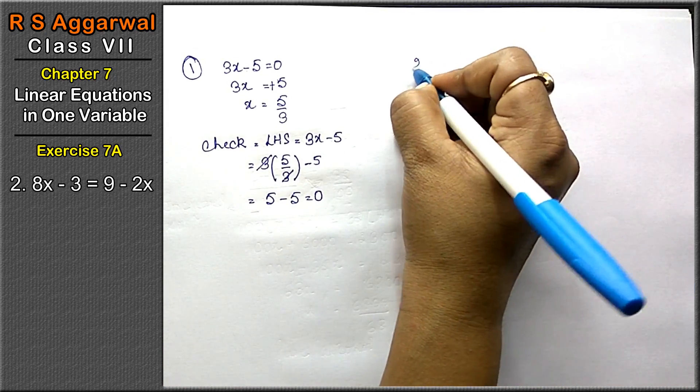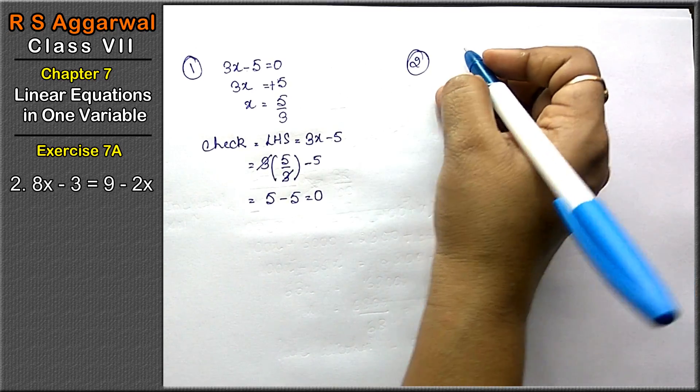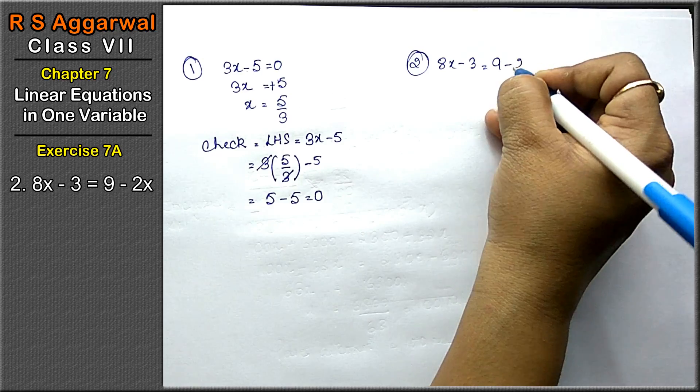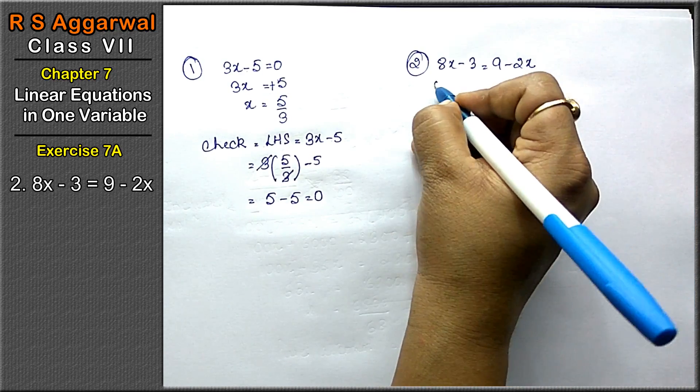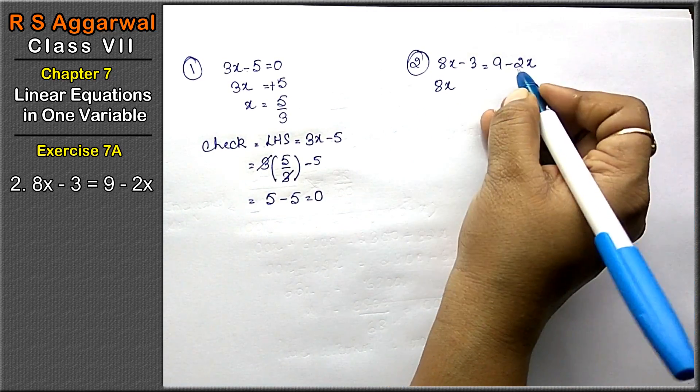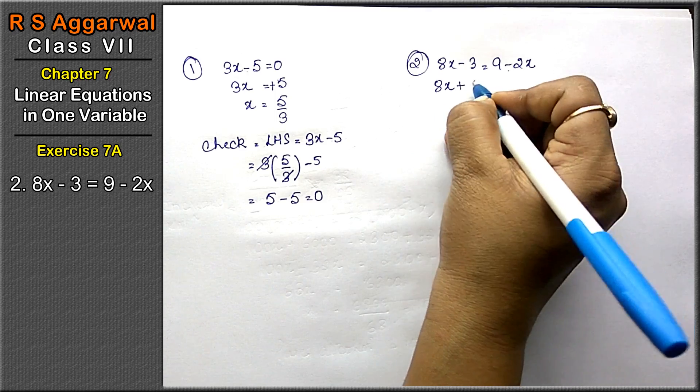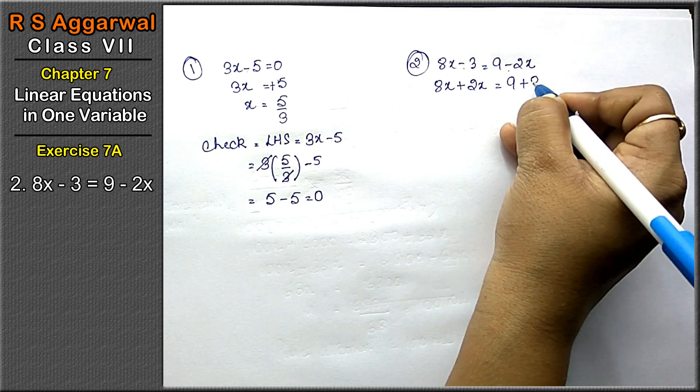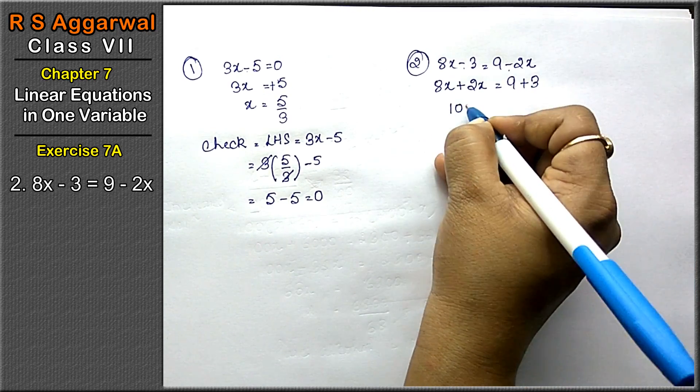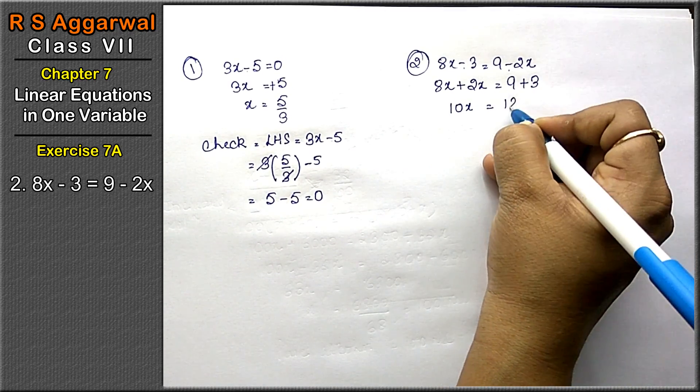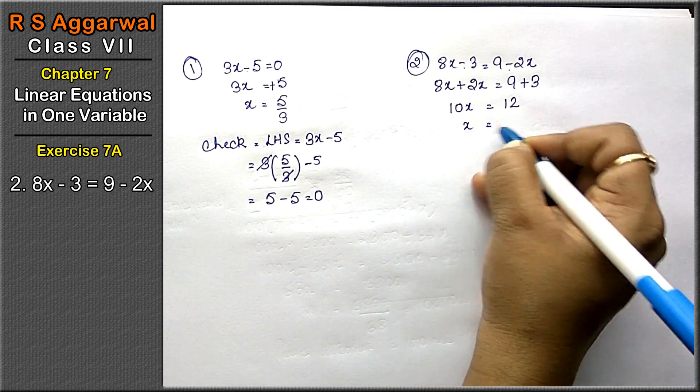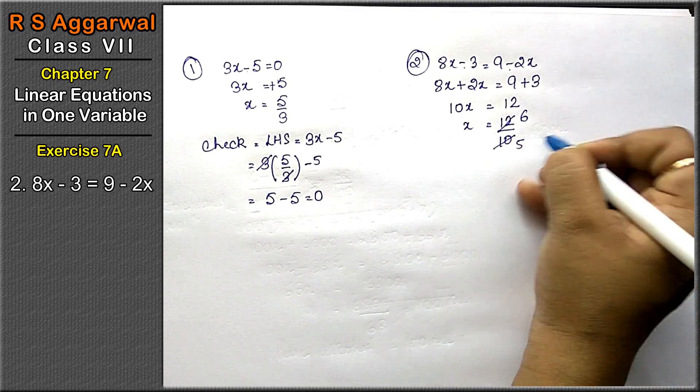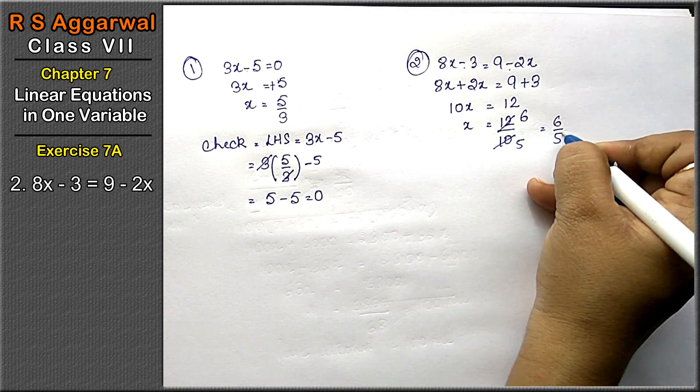Let's do second question. Second question is 8x minus 3 equals to 9 minus 2x. Move x terms to one side: minus 5x plus 7x, and constants to the other: equals to 9, plus 3. So the answer is 10x equals to 12. x equals to 12 upon 10, which simplifies to 6 upon 5.